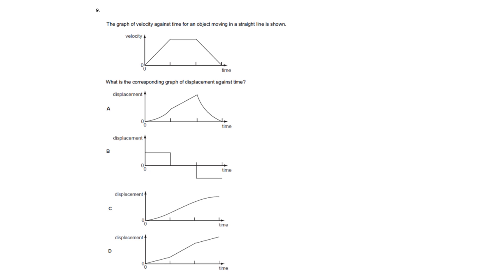Question nine: the graph of velocity against time for an object moving in a straight line is shown. What is the corresponding graph of displacement against time?